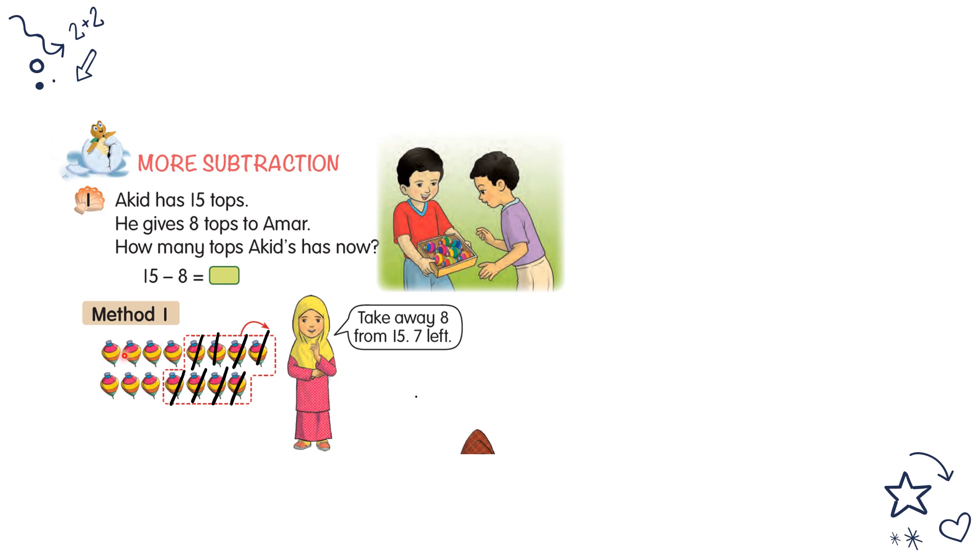One, two, three, four, five, six, seven, eight. So now how many are left? One, two, three, four, five, six, seven. So the answer is seven.